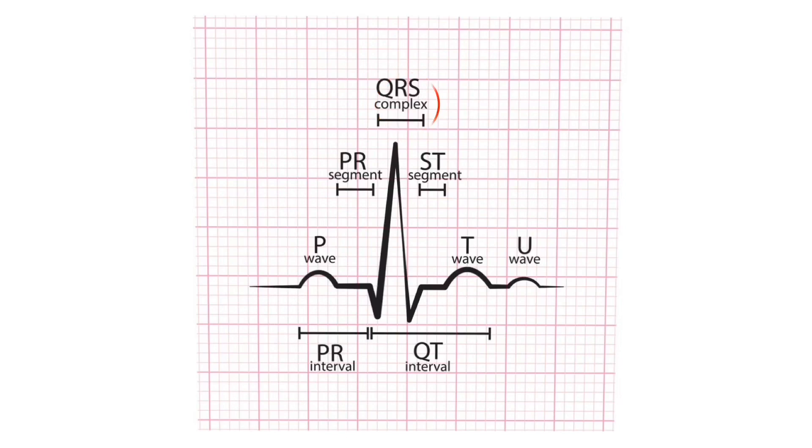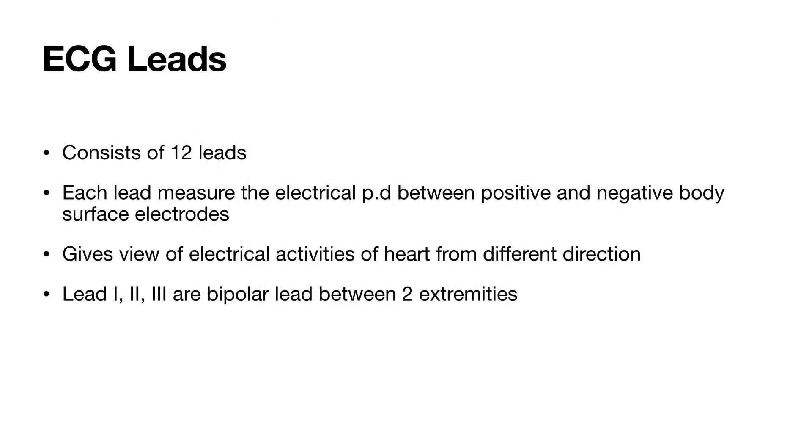This activity is recorded as QRS complex. Once ventricles are totally depolarized, there is no electrical activity for a brief period. So ECG returns to isoelectric line and records ST segment. Then repolarization of ventricles begin and recorded as T-wave. Repolarization is much slower than depolarization and so T-wave is broader than QRS complex but it is in same direction as the main wave of QRS complex.